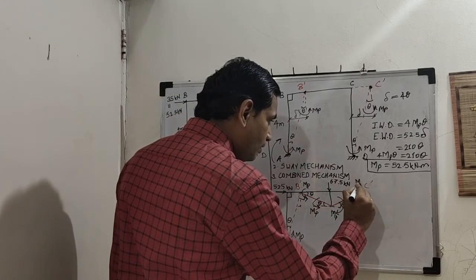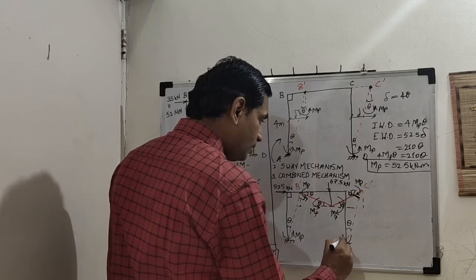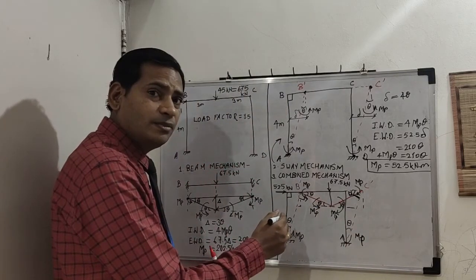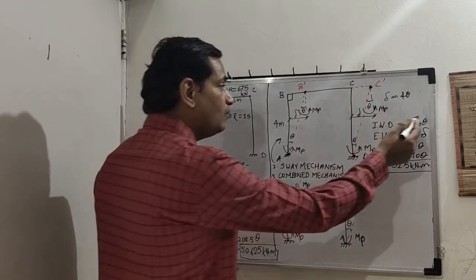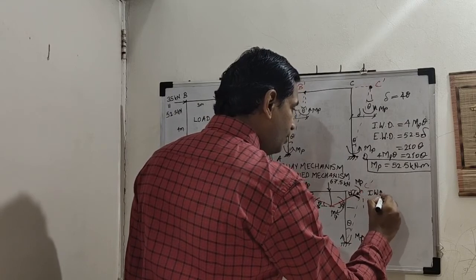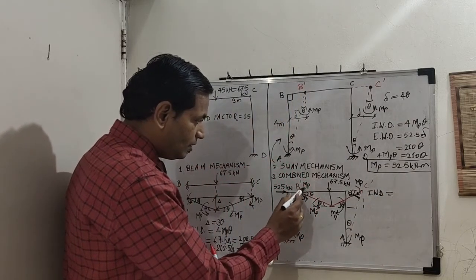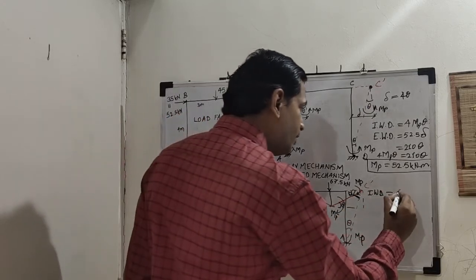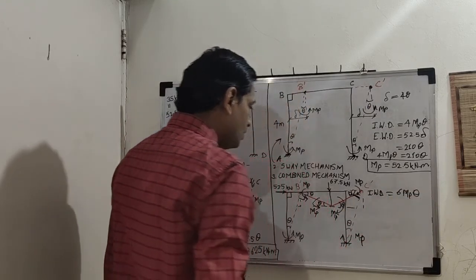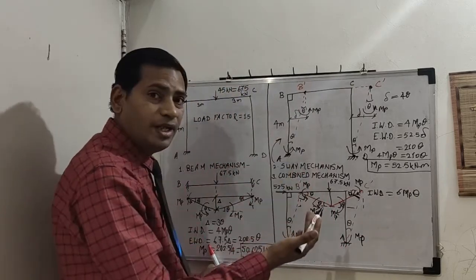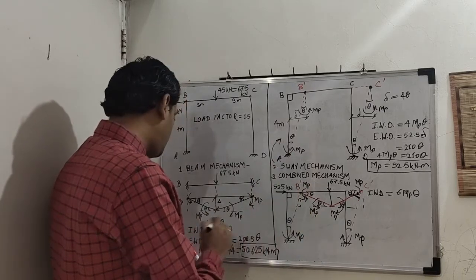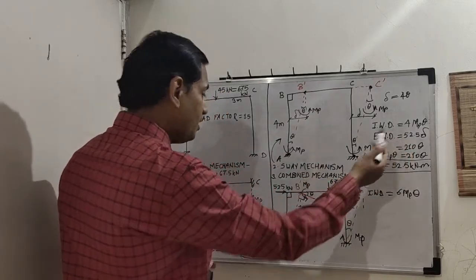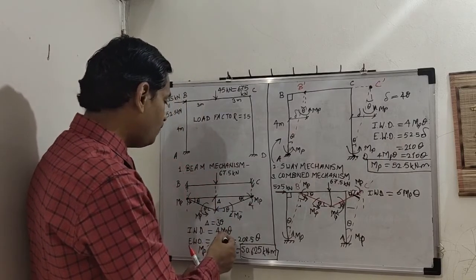Showing MP values at all plastic hinge locations in the combined mechanism: one at A (column base), one on the beam side at B', one under the point load, one at C' on the beam side, one at top of right column, and one at D (right column base) — six locations in total. Internal work done = 6MP·θ. If you simply combined beam and sway (4 + 4 = 8), we cancel the two joint thetas that don't apply, leaving 6MP·θ.